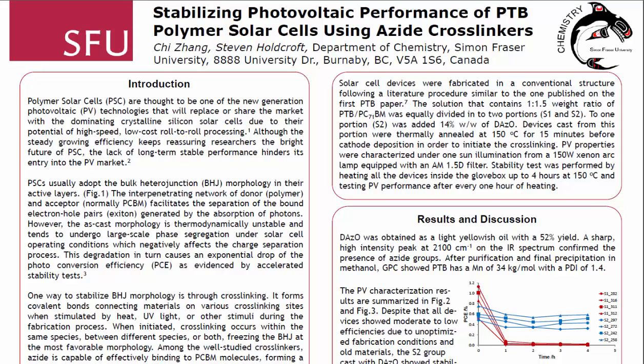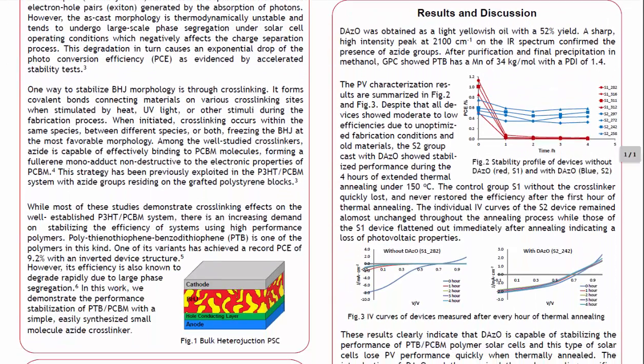Stability testing was performed by heating all devices inside the glove box up to four hours at 150°C and testing PV performance after every one hour of heating. The diazidooctane was obtained as a light yellowish oil with a 52% yield. A sharp high-intensity peak at 2100 cm⁻¹ on the IR spectrum confirmed the presence of azide groups. After purification and final precipitation in methanol, GPC showed PTB has a number average molecular weight of 34 kg/mol with a polydispersity index of 1.4.